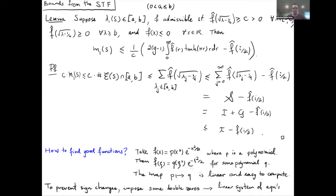By playing with the imposed double zeros and optimizing the upper bound we get, the results in practice converge to nice numbers. We didn't invent this strategy — we copied it from a paper by Cohn and Elkies, who used this exact approach for bounding the density of sphere packings in Euclidean spaces, using the Poisson summation formula instead of the Selberg trace formula. Their strategy gave bounds very close to the maximum in dimensions 8 and 24, and Viazovska and collaborators later proved these are optimal.